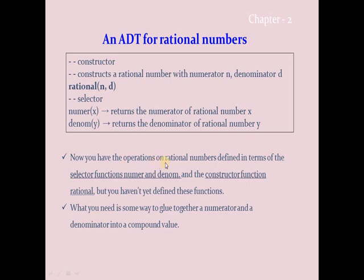Now you have the operations on rational numbers defined in terms of the selector functions `numer` and `denom`, and the constructor function `rational`. But you have not yet defined these functions. The `numer(x)` function is going to return the numerator of the rational number x, and `denom(y)` is going to return the denominator of the rational number y.